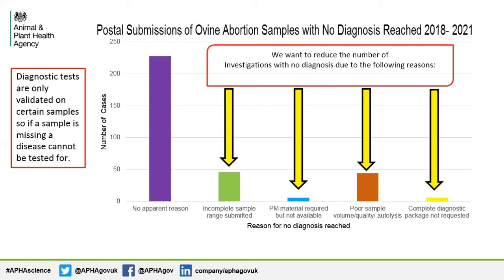For example, we cannot test for border disease on placenta — we need spleen. Next, we have poor sample quality or volume. We will discuss in the next slide which fetuses should be avoided. Other reasons include complete diagnostic package not requested: if you do not test for a disease, you will not find it. We can only test for what you ask for. Occasionally, post-mortem samples would be more appropriate, particularly if there is suspected concurrent illness in the ewe.